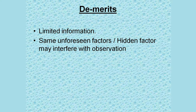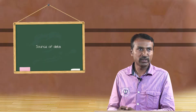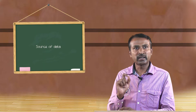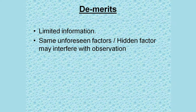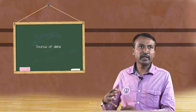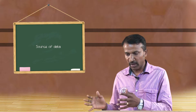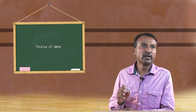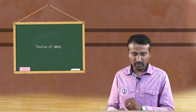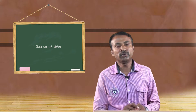The main demerits of the observation method are limited information — a person who does not have time may try to hide things and escape. Also, some unnecessary or hidden factors may interfere with the observation. For example, a female patient presenting with central obesity — we may think she is pregnant, or a patient with ovarian cancer has a huge ovarian mass in the lower abdomen which can be confused with central obesity. These are errors that may occur in the observational method.